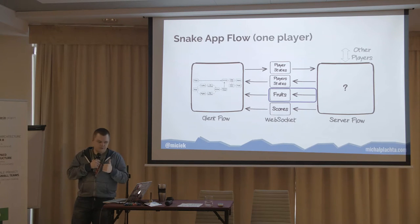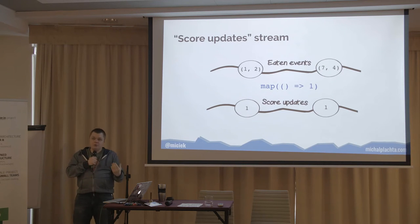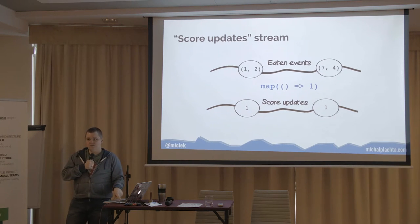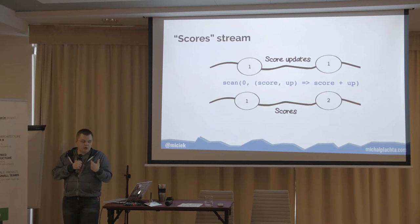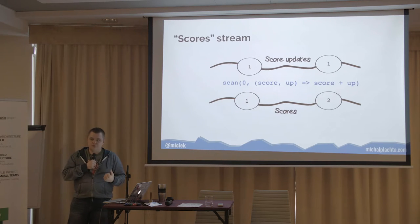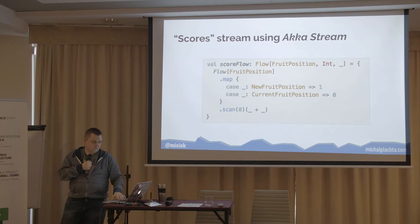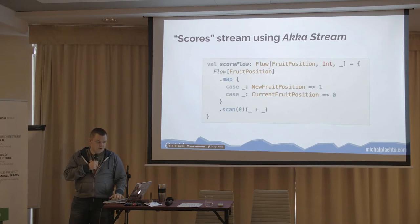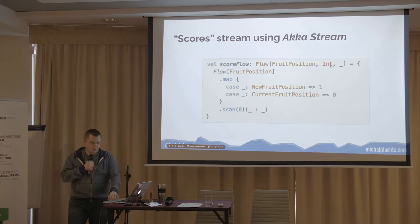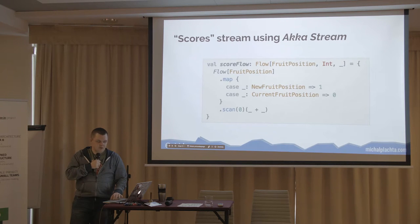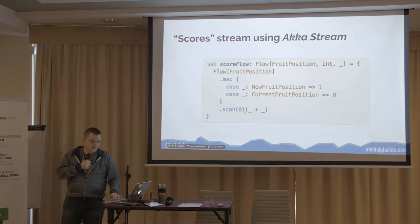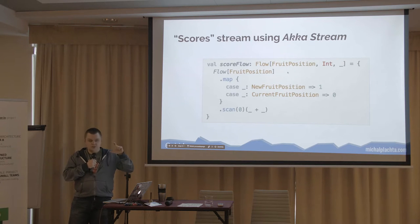Now let's focus on scores. We reuse the same eaten events stream and map it with a function that always returns 1, giving us a score updates stream. Then we accumulate values to produce a score stream for this particular player. In Scala code, this uses the same Flow type — from fruit position to Int. It gets a new fruit position, and whenever it's newly generated we have 1, otherwise 0, and we scan over it with initial value 0. So we produce an Int based on fruit position.